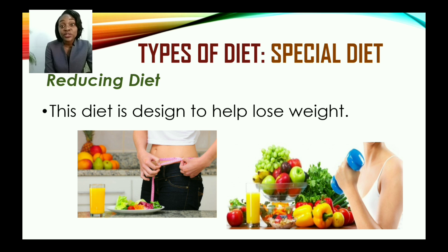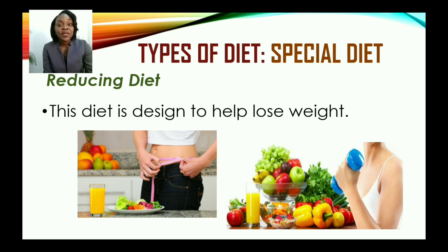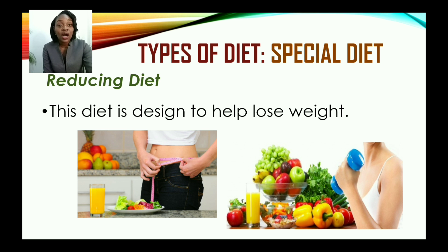Now let us look at some types of special diets that contribute to good health and well-being. The first is a reducing diet. As its name suggests, this diet is designed to help persons lose weight. It consists of a lot of vegetables and fruits, and less fatty foods, sugars, and carbs.